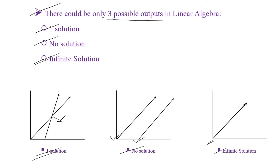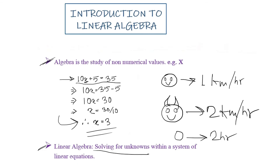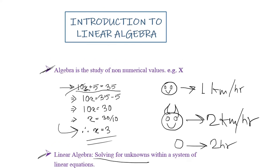It is absolutely impossible to have a solution in Linear Algebra outside these three cases. Another thing to keep in mind: an equation with an exponential term cannot be considered a linear equation. For example, equations with x squared or the square root of x are not linear equations. Every time we talk about a linear equation, x should not have any exponential term related to it.